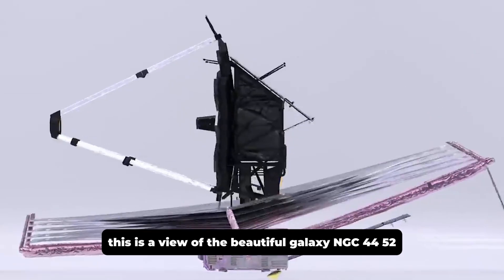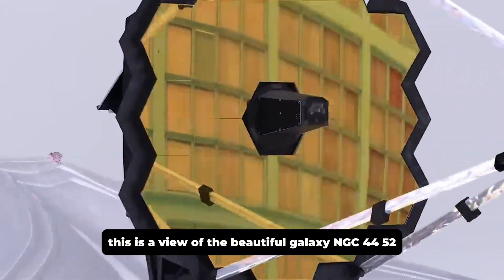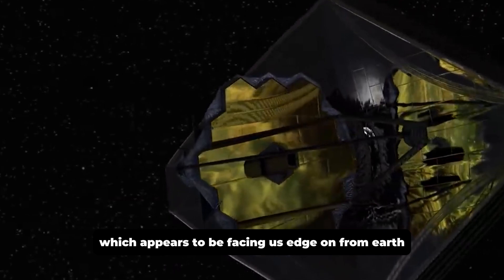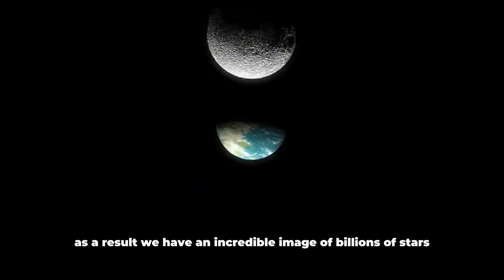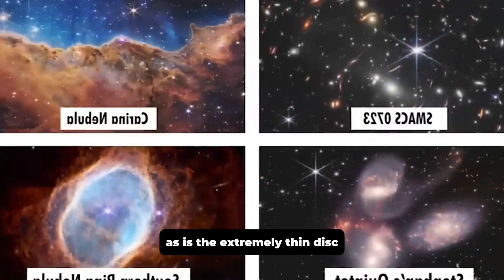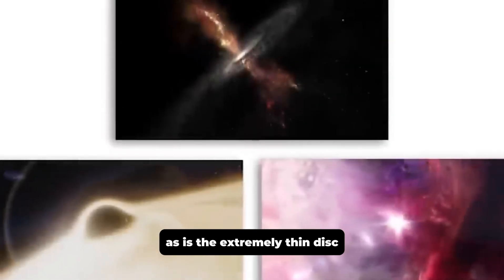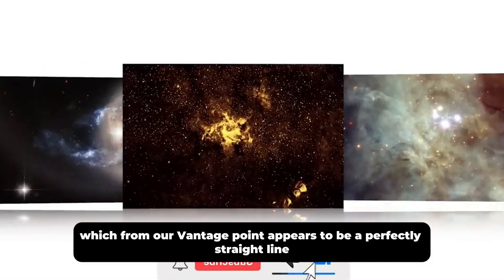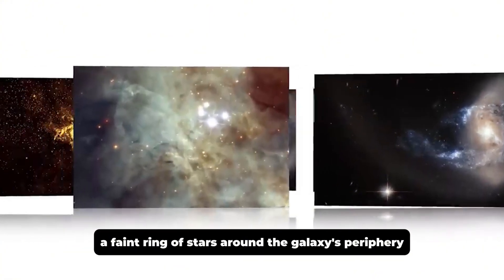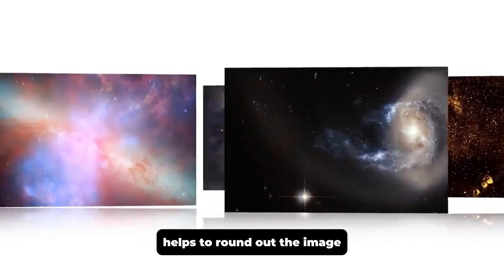Number four, a slender galaxy. This is a view of the beautiful galaxy NGC 4452, which appears to be facing us edge-on from Earth. As a result, we have an incredible image of billions of stars seen from a novel perspective. The central luminous core is clearly visible, as is the extremely thin disk, which from our vantage point appears to be a perfectly straight line. A faint ring of stars around the galaxy's periphery helps to round out the image.